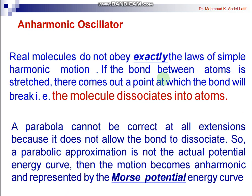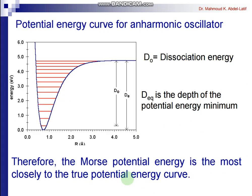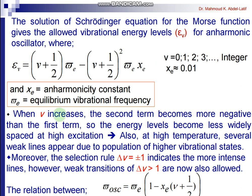Now let us consider the anharmonic oscillator. Real molecules don't obey simple harmonic motion exactly — when a bond is stretched far enough, it will break and the molecule will dissociate into atoms. The harmonic oscillator parabola does not account for bond dissociation, so we use the Morse potential, given by V = Dₑ(1 − e^(−ax))², where Dₑ is the dissociation energy and the depth of the potential energy minimum.